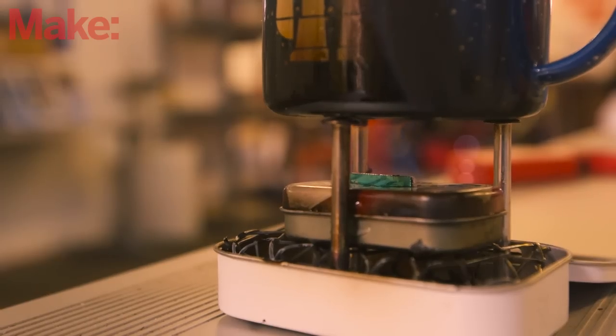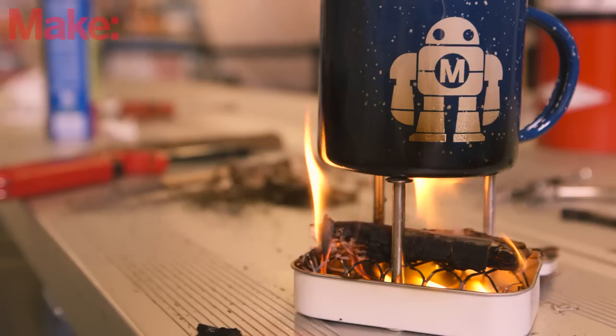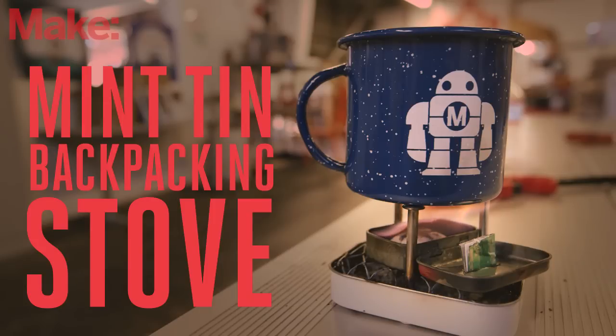In today's weekend project by Mike Kruiser, we'll use two mint tins to create a literal survival tool. A mini camp stove that works with denatured alcohol, solid fuel tablets, or wood chips and twigs.